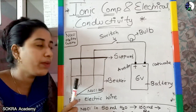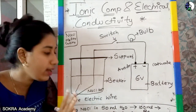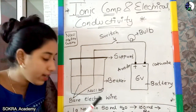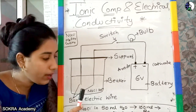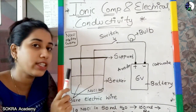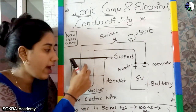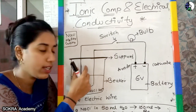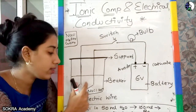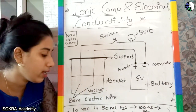The bulb will glow only when my circuit is complete; otherwise it will not. Electrons conduct electricity in the wire. Ions conduct electricity in the liquid. In the solution, ions will be present, and through the ions we conduct electricity. In the electrical wire, electrons pass and complete the circuit.